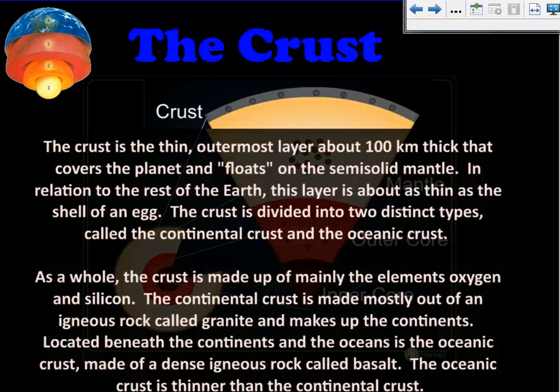As a whole, the crust is made up of mainly the elements oxygen and silicon. The continental crust is made mostly out of igneous rock called granite and makes up the continents. Located beneath the continents and the oceans is the oceanic crust, made of a dense, igneous rock called basalt. The oceanic crust is thinner than the continental crust.